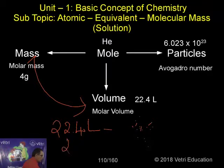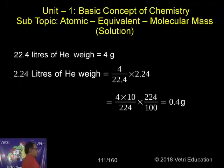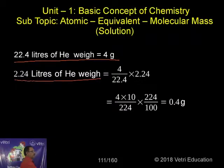It is 2.24, so we will calculate. Just see here. It is calculated here: 22.4 liters of helium weigh 4 grams. 2.24 liters of helium weigh 4 by 22.4 into 2.24. I can simplify this by converting into whole numbers.